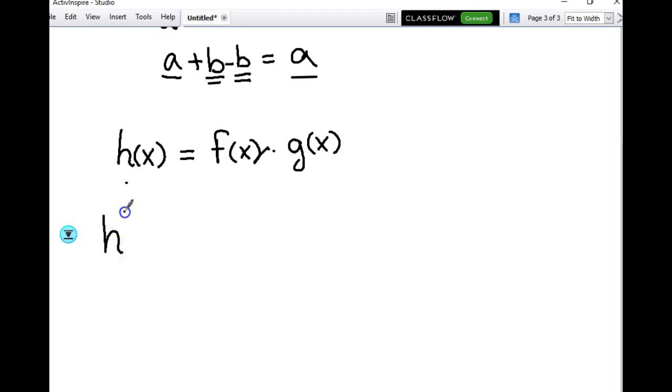Okay, now h prime of x is equal to the limit as delta x approaches 0 for the difference quotient. So h of x is equal to the limit as h of x plus delta x minus h of x over delta x.